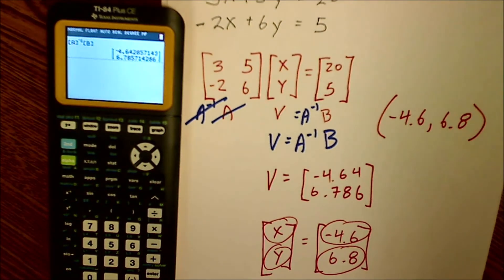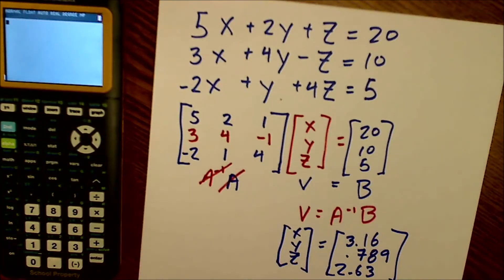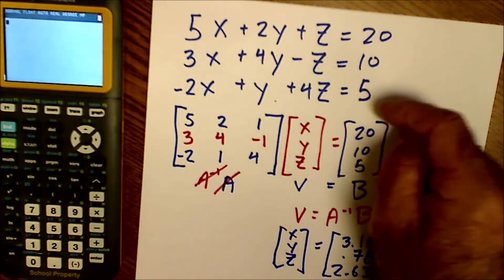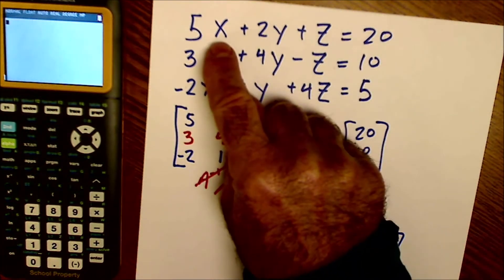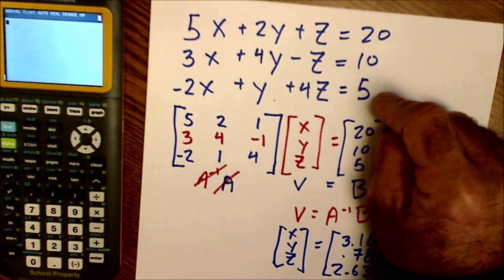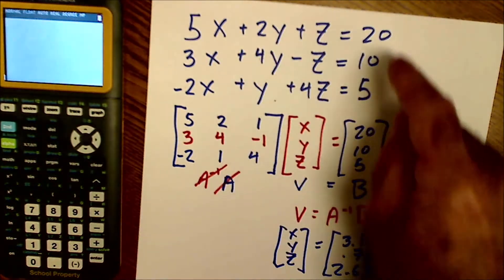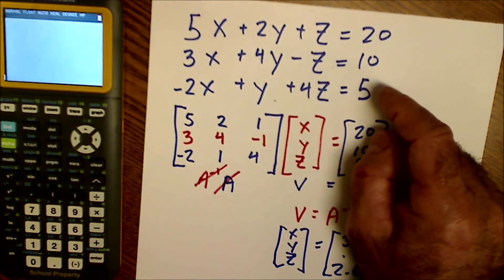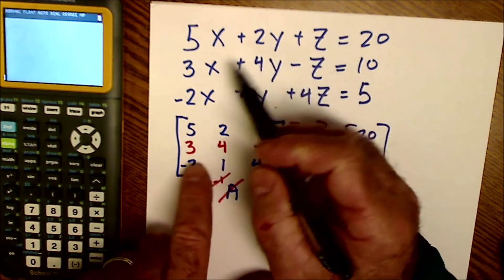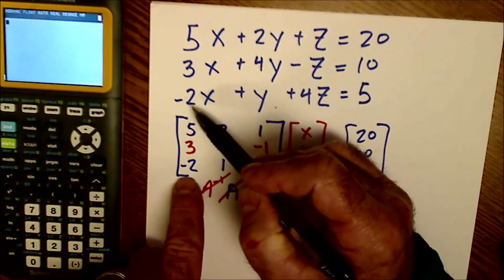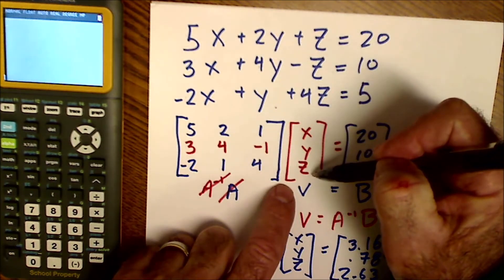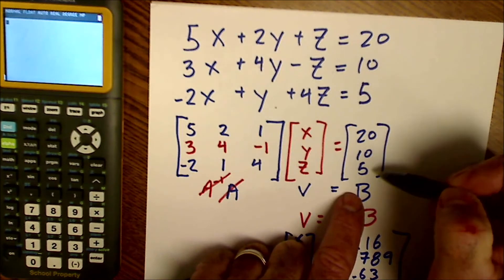I'll just do one more. This time I'll do a three by three. Here's another equation. This one's a little more complicated. I have three variables, three equations. I have my X's all straight down, my Y's straight down, and my Z's straight down, all in order. And it's equal to my solutions. Once I have my three equations in that order, then I'm going to create matrices. So the matrix I'm going to create is going to be 5, 2, 1, 3, 4, negative 1, negative 2, 1, and 4, times my variable matrix XYZ is equal to my solution matrix, 20, 10, 5.